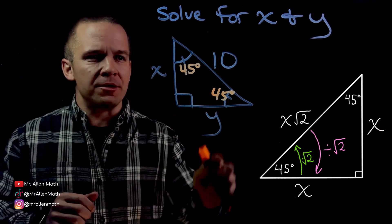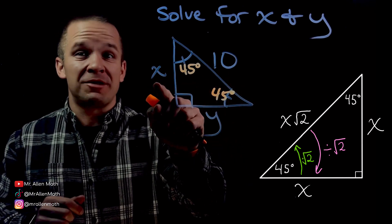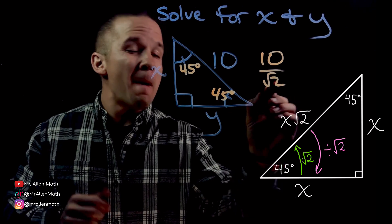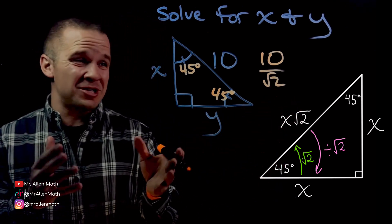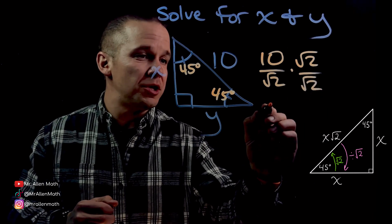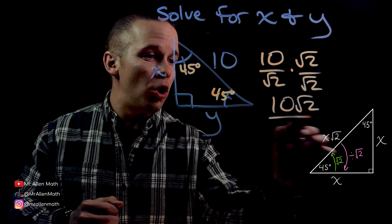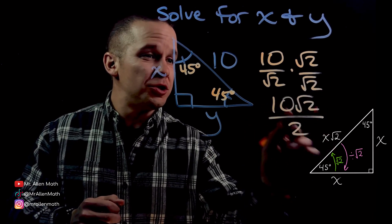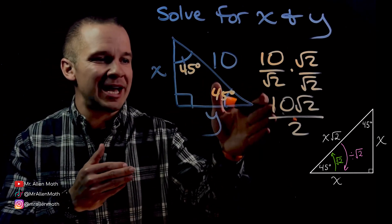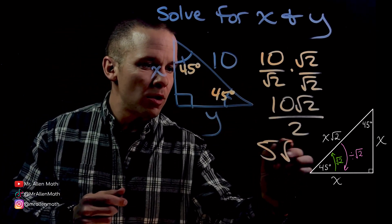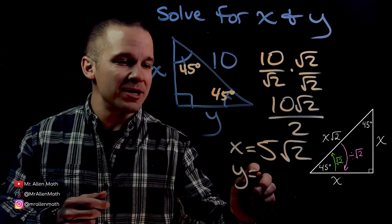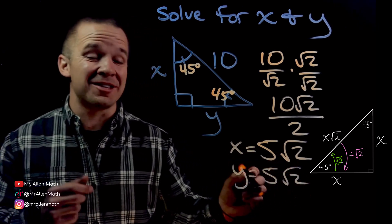I have my hypotenuse, and I know to get to one of my legs I'd have to divide by root two. So I'm going to take 10 divided by root two, but unfortunately you can't just leave it like that — I've got to rationalize. I'm going to multiply by root two over root two, and now I have 10 root two over two, because root two times root two is two. Got to simplify: 10 divided by two is five root two. Both X and Y equal five root two because my legs are the same.